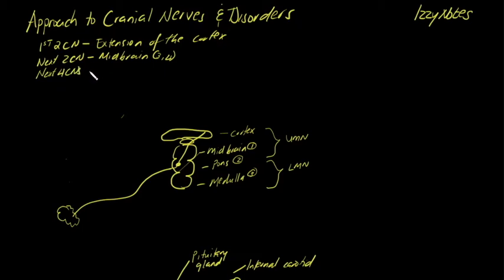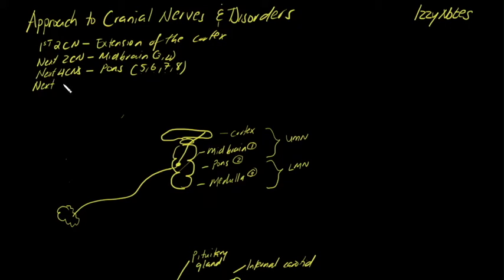The next four cranial nerves — five, six, seven, and eight — actually originate in the pons. So if you have a patient with a lesion in the pons, cranial nerves five, six, seven, and eight are most likely to fall out. The last cranial nerves — sometimes called the lower cranial nerves — originate from the lower aspect of the brainstem, which is the medulla.